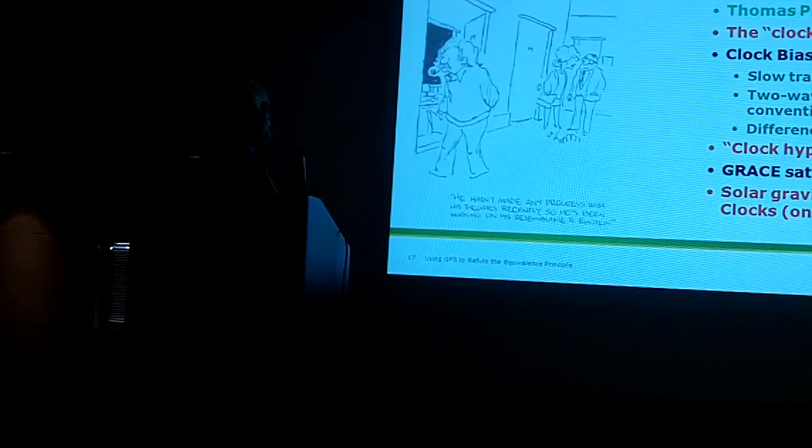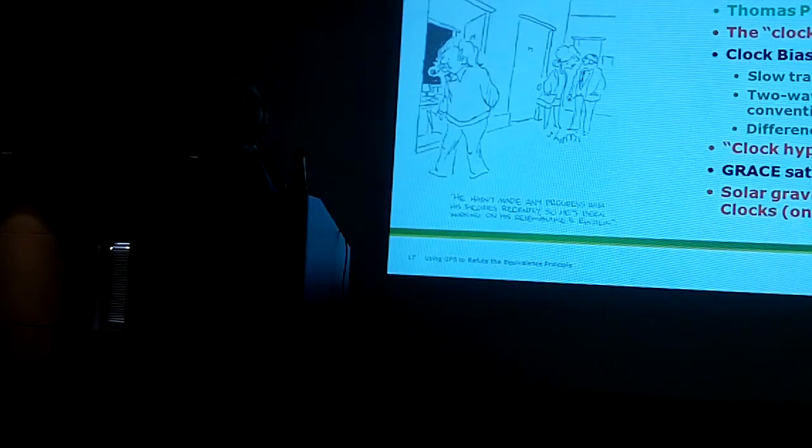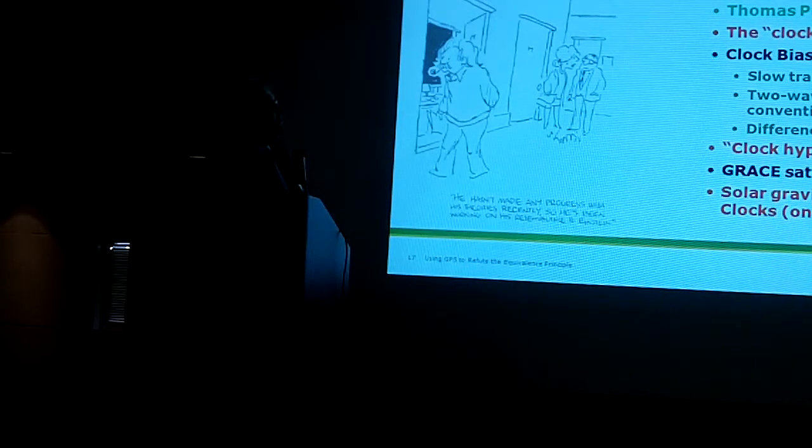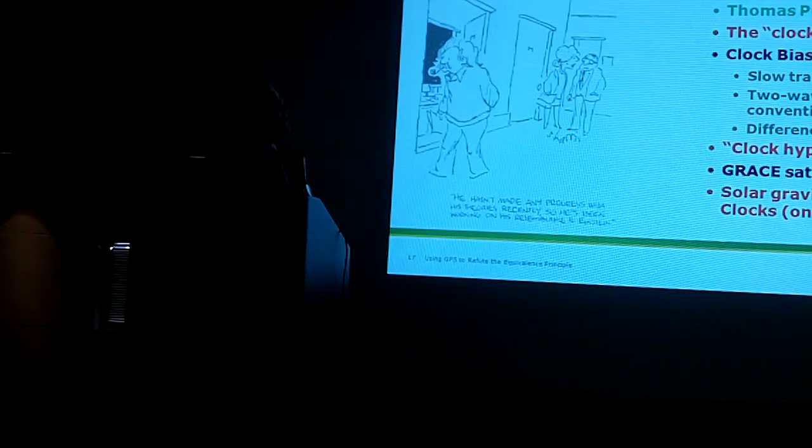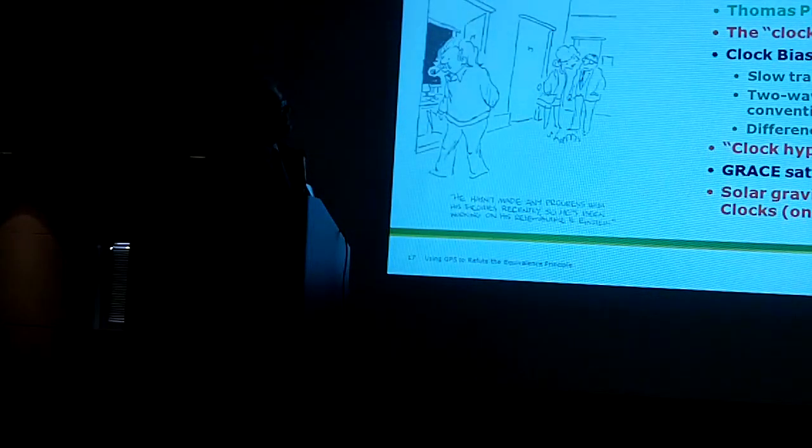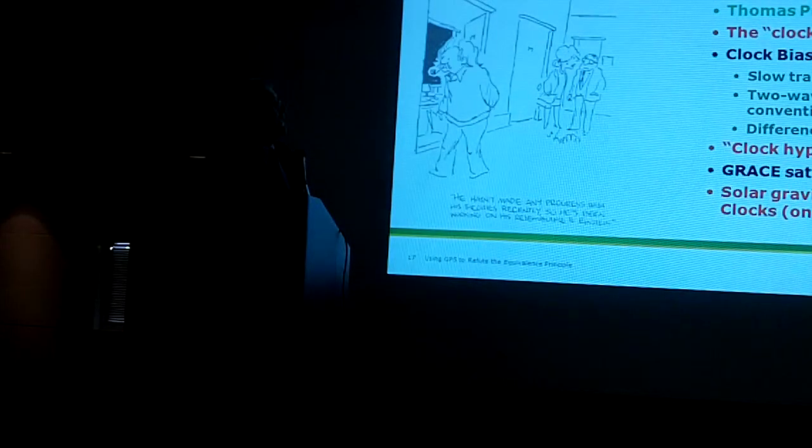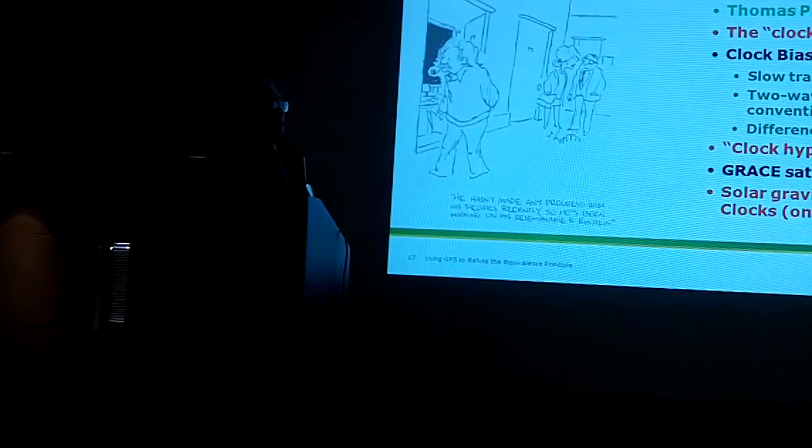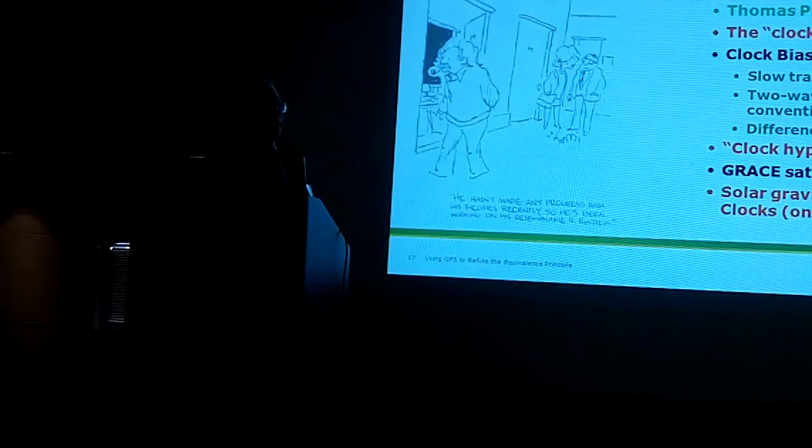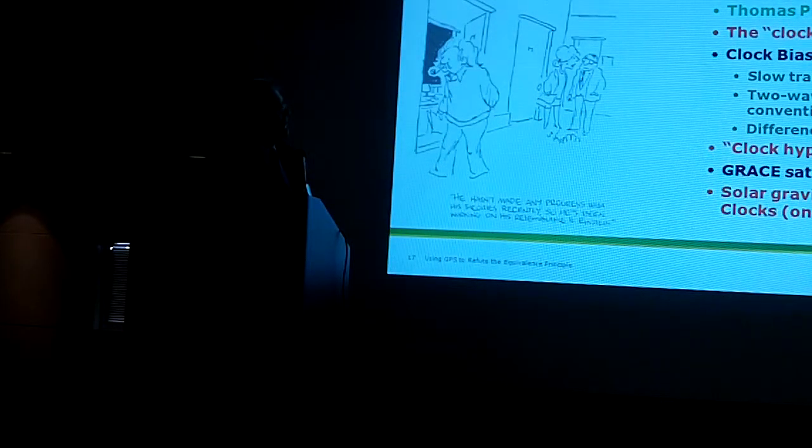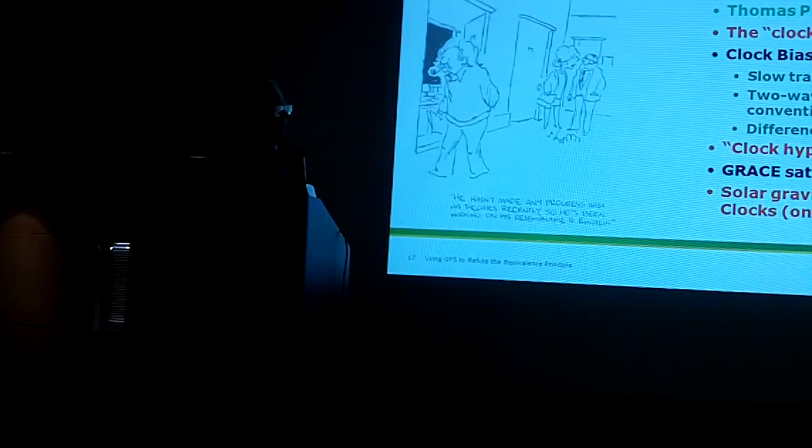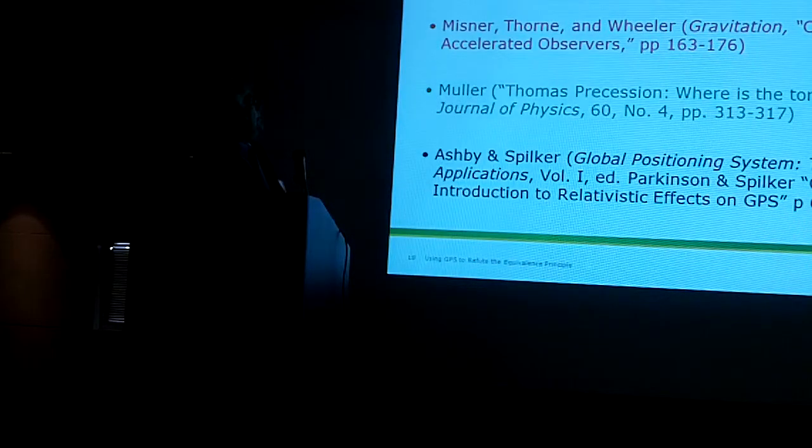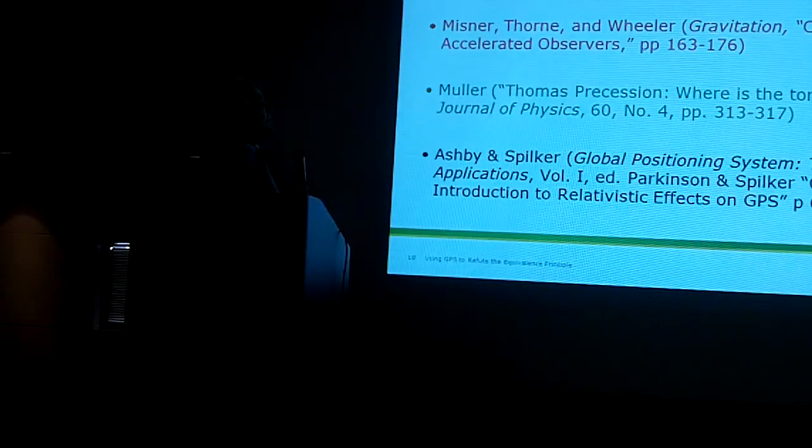Again, he hasn't made any progress with his theories recently, so he's been working on his resemblance to Einstein. I look at authorities—Goldstein, Meisner et al., Mueller, and Ashby—and I talk about several different topics here in trying to prove that infinitesimal Lorentz transformations don't really work the way they think they do. I'll look at an alternative hypothesis, the clock hypothesis, that's been written up by Professor Goy in Italy. Then I want to look at some clock biases and compare the two—clock hypothesis and the ILT. Look at some of the GRACE satellites, which show a problem. And finally, the solar gravitational effect on clocks. These are just references to some of the quotes that I will look at.